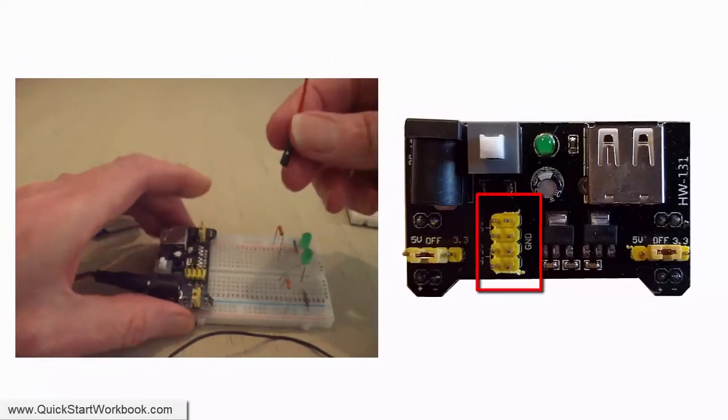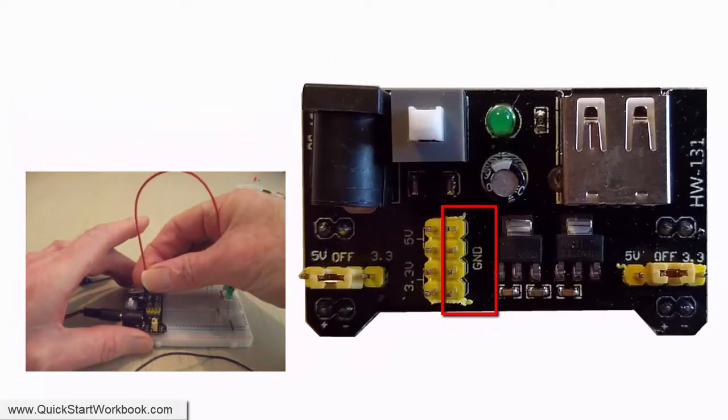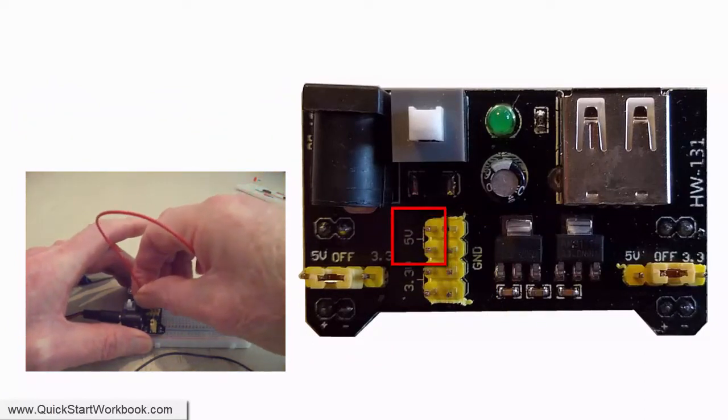There are two rows of four pins. On one side there are four ground or 0 volt connectors. On the other side, there are two 3.3 volt and two 5 volt connectors.